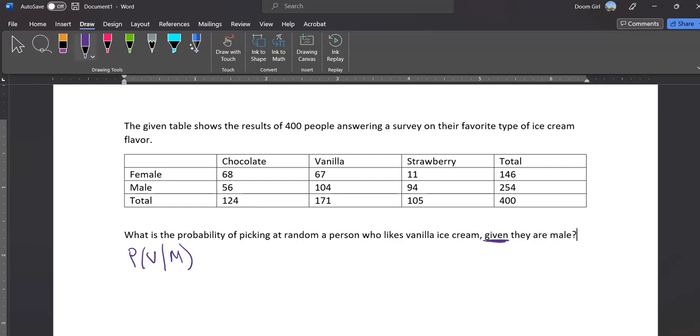So my denominator value is different than the table total. It is going to be my subset of males. Where do I find that on here? I find that by finding where male is and going to the very end. Here is my denominator value. I'm going to write that like this: 254 is my denominator value.